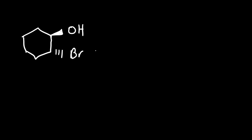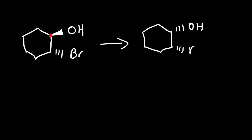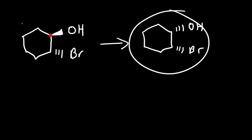Now let's talk about diastereomers. How can we draw the diastereomer of this molecule? To draw a diastereomer, all you need to do is change some, but not all, of the chiral centers. So let's change the first chiral center — the OH is on the wedge, let's put it on a dash. And so this is the diastereomer of this molecule.